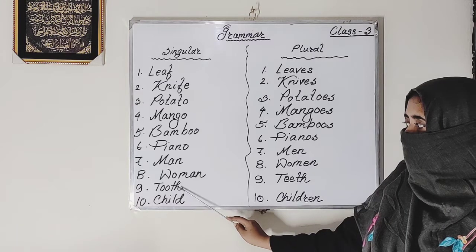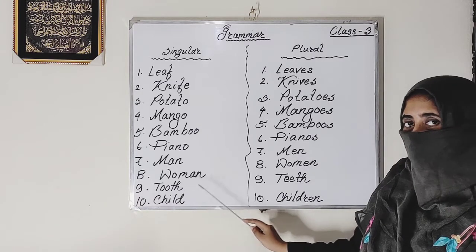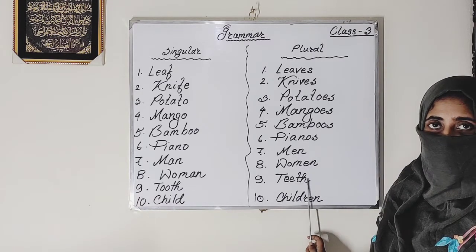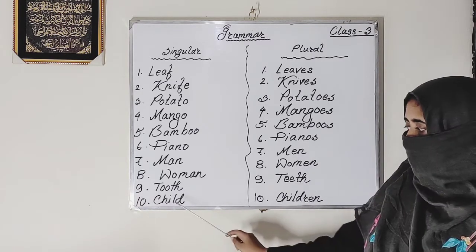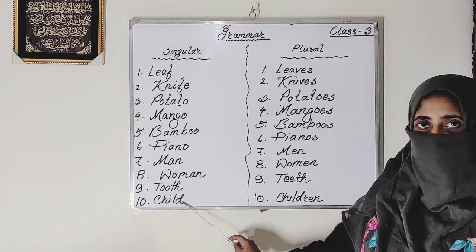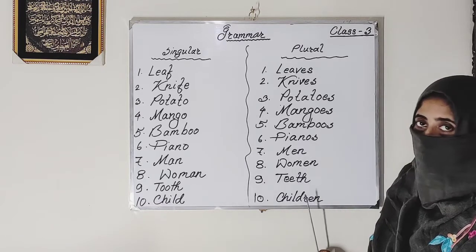Singular: tooth — plural: teeth. Singular: child — plural: children.